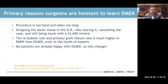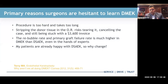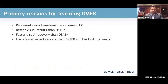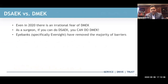Why are people hesitant to learn DMEC? From work by Mark Terry, some feedback and criticisms were that it was too hard, would take too long, people didn't want to strip the donor and mess it up — which is difficult, as I can tell you from experience — and the rebubble rate was high. Patients were very happy with DSEC, so why change? Well, DMEC is a more exact anatomic replacement, you get better and faster visual results, and a lower rejection rate. If you can do DSEC, you can do DMEC — there's absolutely nothing different except for a few tips and tricks.